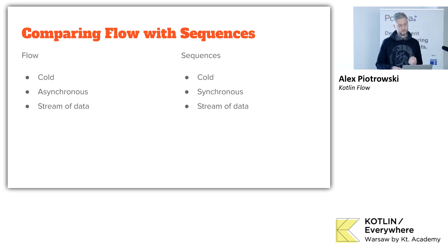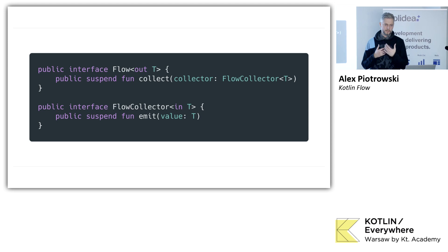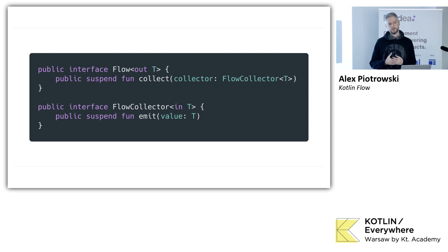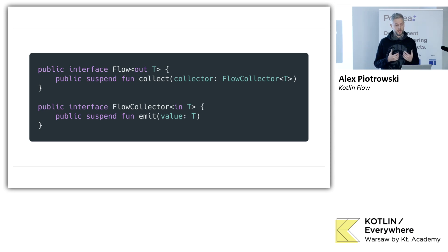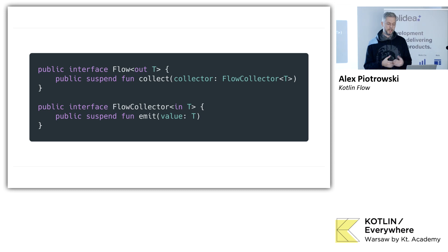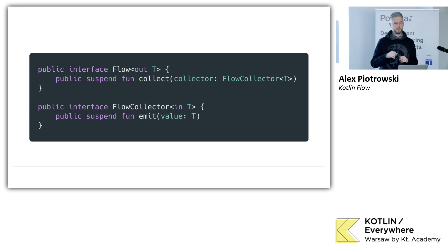So one more thing to think about when understanding flow is just how flow is constructed. There are actually two interfaces. One interface is called Flow, which has the collect suspending function. The second interface is FlowCollector, which I'm not sure why it doesn't have a collect method — that confused me a lot. But FlowCollector emits data, and the Flow interface at the end collects data. I'm always confused why the collect method is in the Flow interface and not in the FlowCollector interface. But when you see it in the code, it makes sense. So at the end we're going to collect the flow — that's the first interface — and inside of a flow we'll have one or more collectors emitting data down the stream.